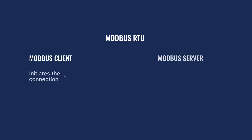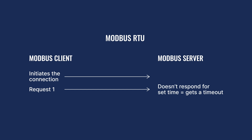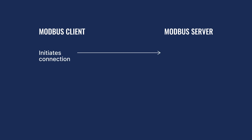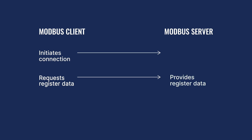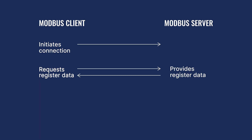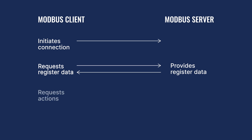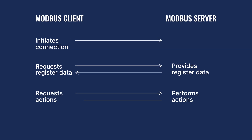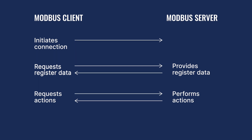With Modbus RTU, the client also initiates communication but relies solely on the set timeout value to determine whether the Modbus server is ready to perform actions or other requests. Essentially, the Modbus client initiates the communication by establishing a connection and then requesting particular information or actions from the server. The Modbus server acts as both a listener and a responder, waiting for the client to connect and issue commands so that the server can perform the requested tasks.